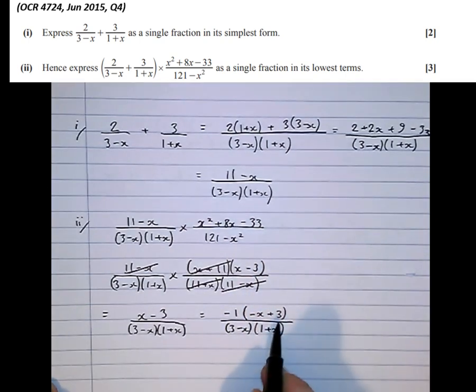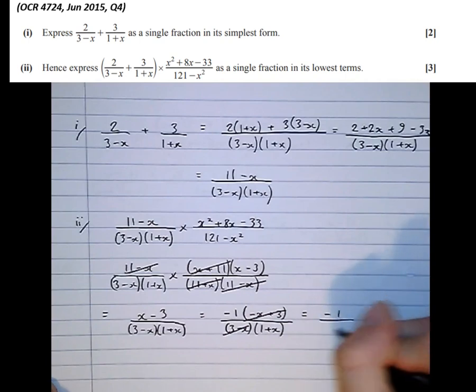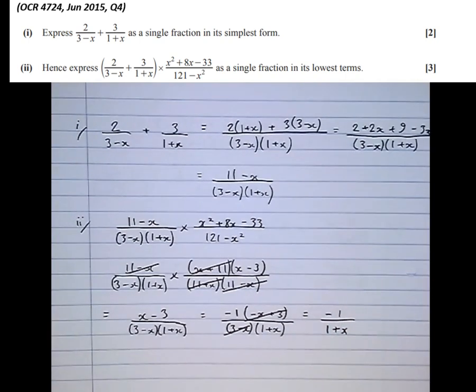And notice, 3 minus x on top, 3 minus x on the bottom. They cancel to give minus 1 over 1 plus x. Quite tricky finish to what seemed initially like a straightforward question.